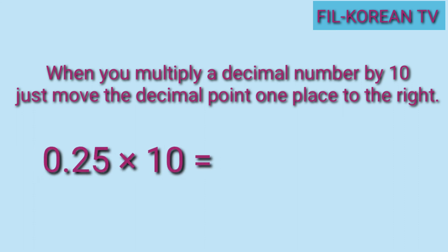Example: twenty-five hundredths times ten. Okay, ang gagawin natin, i-move ang decimal point ng isang beses pakanan — one. Kaya ang decimal point ay dito sa gitna ng two at five. Ang answer ay two and five tenths.